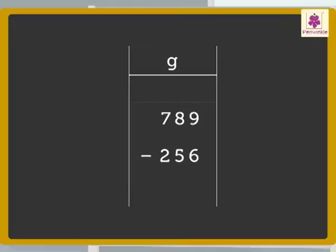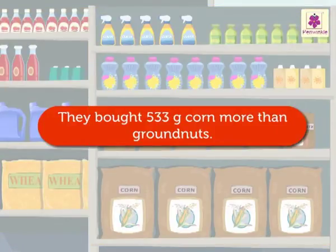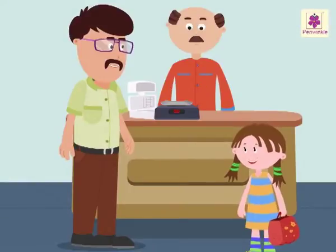9 minus 6 equals 3. 8 minus 5 equals 3. 7 minus 2 equals 5. And the answer is 533 grams. So, it means we bought 533 grams of corn more than the ground nuts.